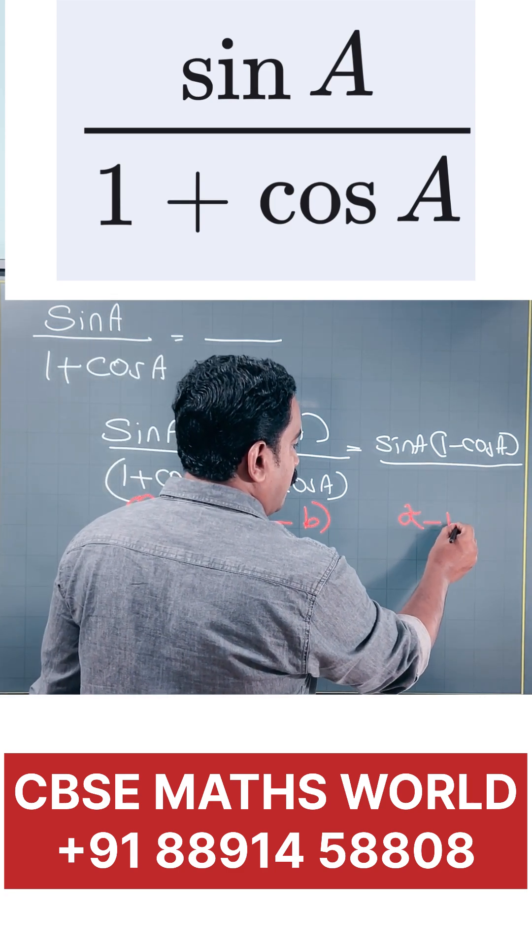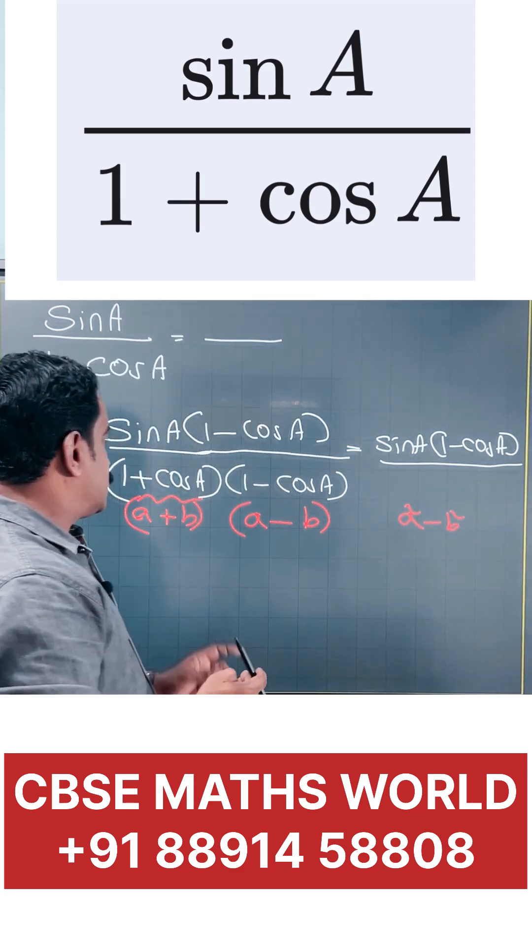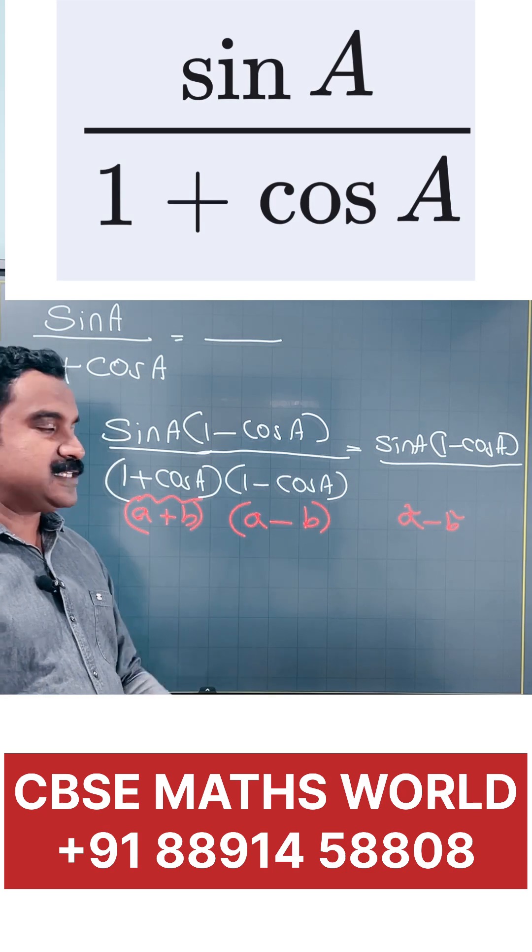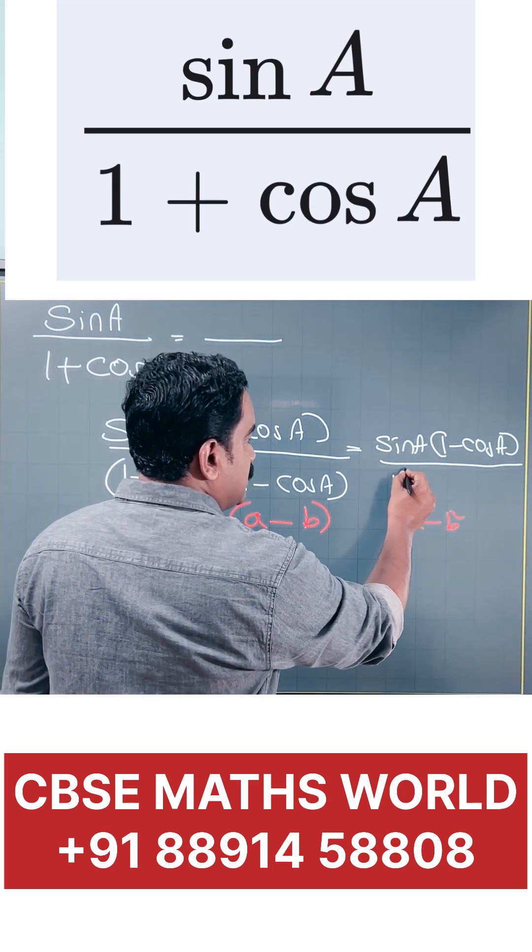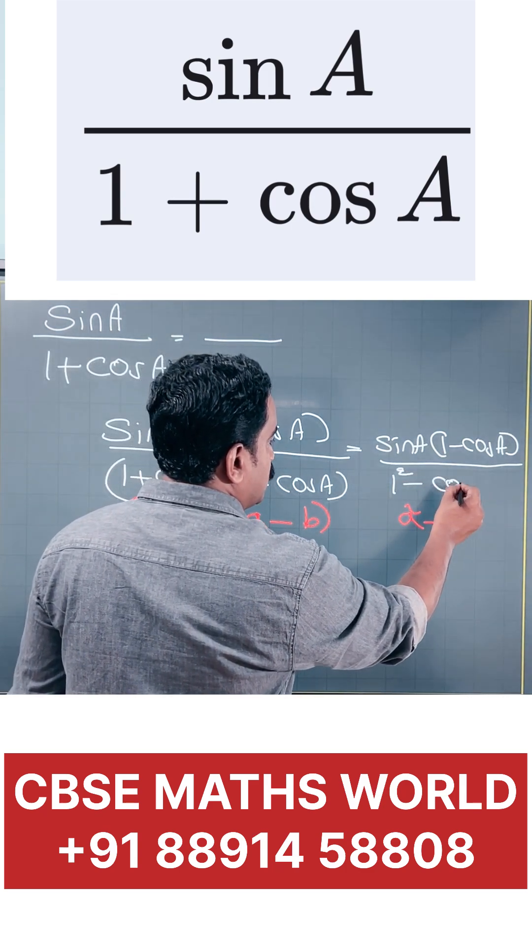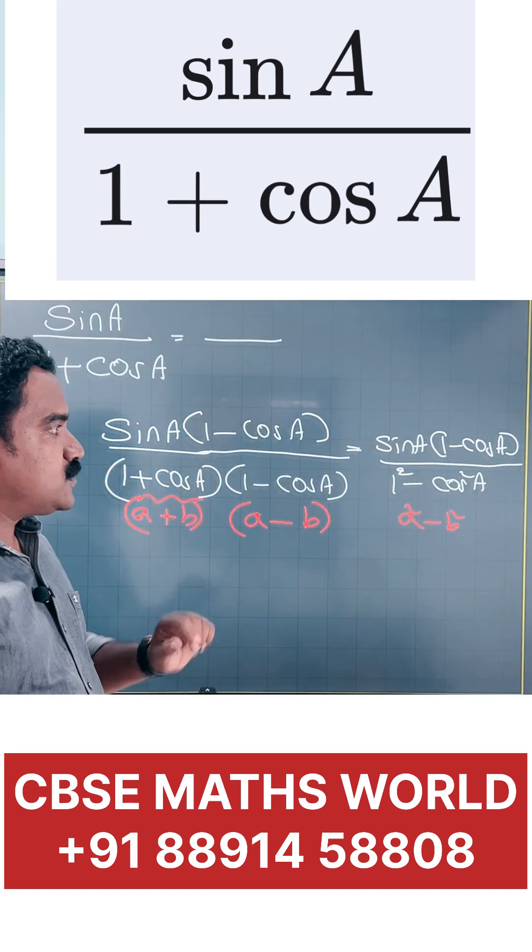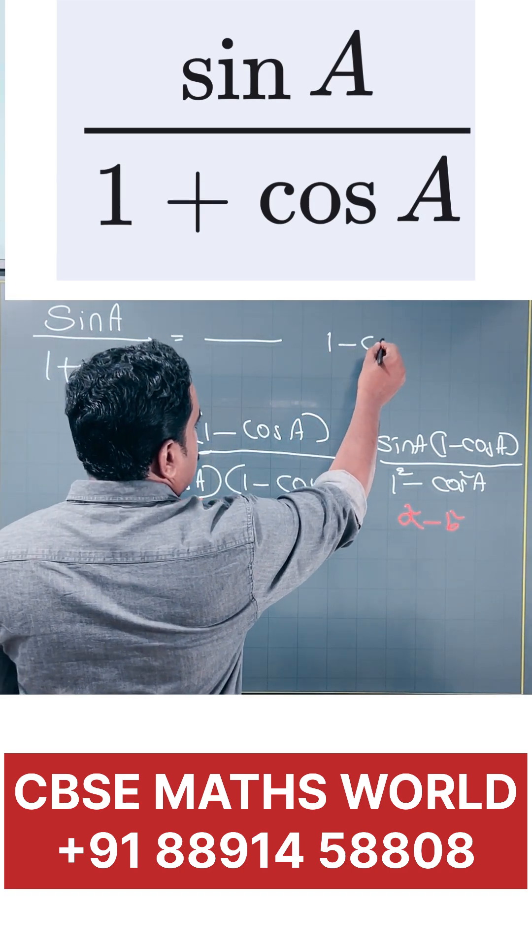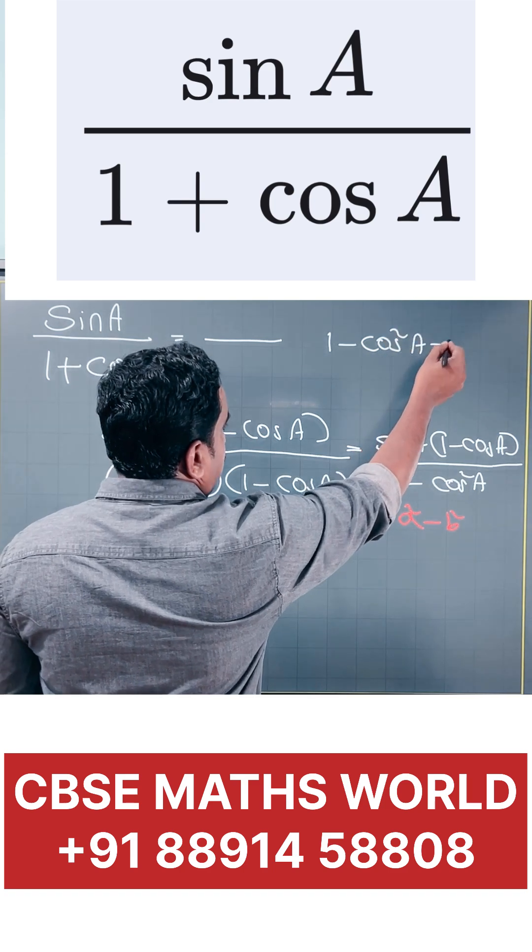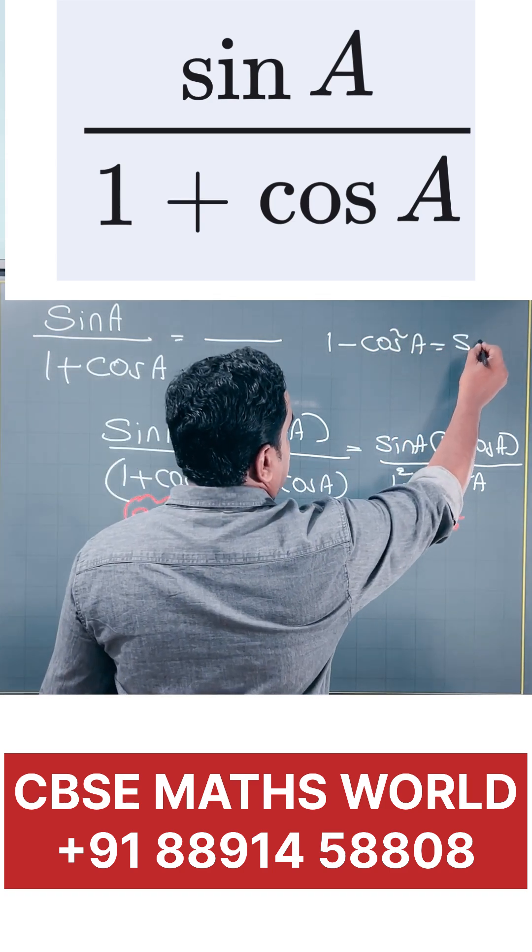Now, the denominator in the form A square minus B square. So, 1 plus cos A into 1 minus cos A is actually 1 square minus cos square A. What is 1 square? 1 square is 1.